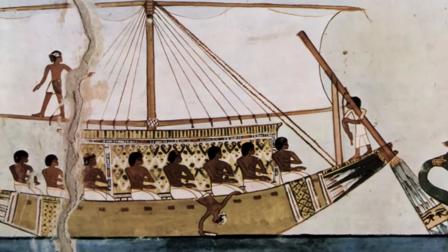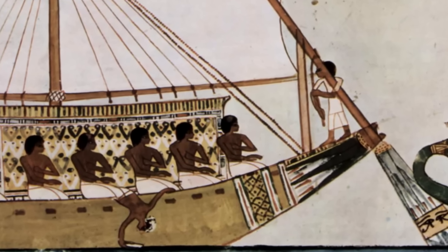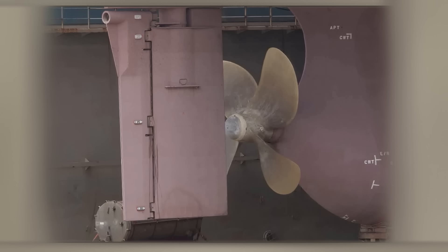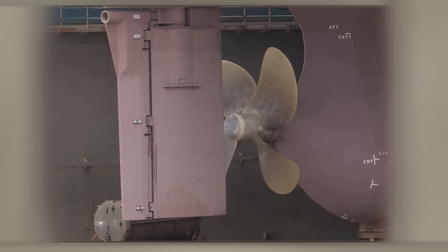The rudder evolved from the steering board that was used in ancient times. The steering board was usually mounted on the right-hand side to suit right-handed sailors. In time, the steering board moved onto the center line through a stock passing through the vessel.